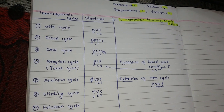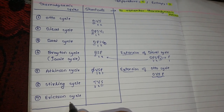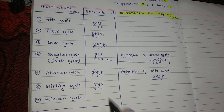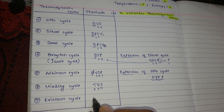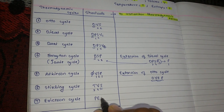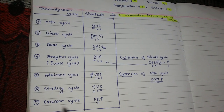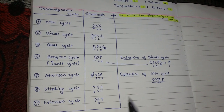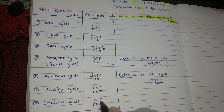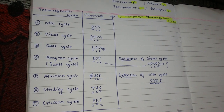Seventh is the Ericsson cycle, which is also one of the most important cycles to remember in thermodynamics. The shortcut is PET, where E stands for Ericsson cycle. It has two constant pressure processes and two constant temperature processes.